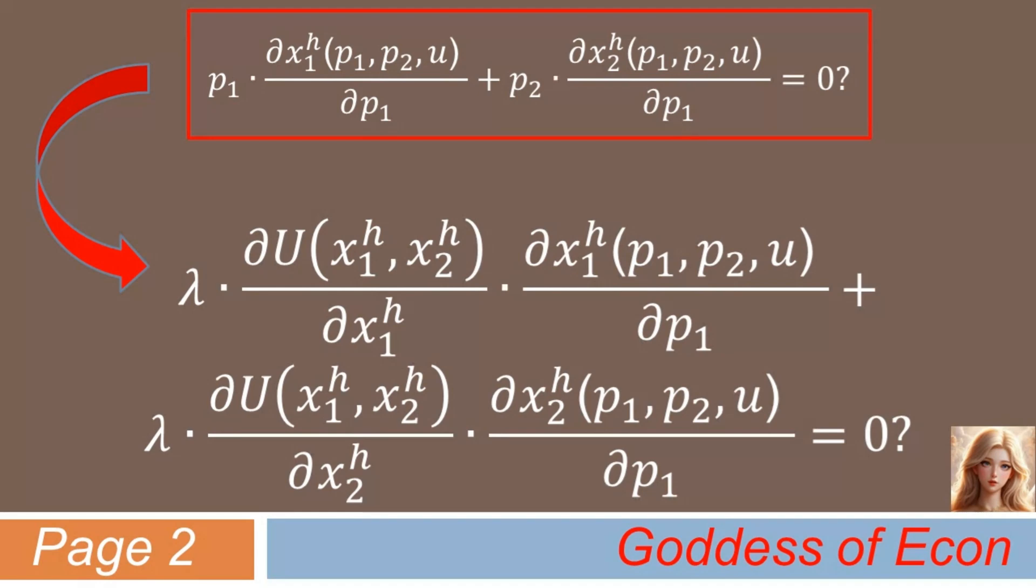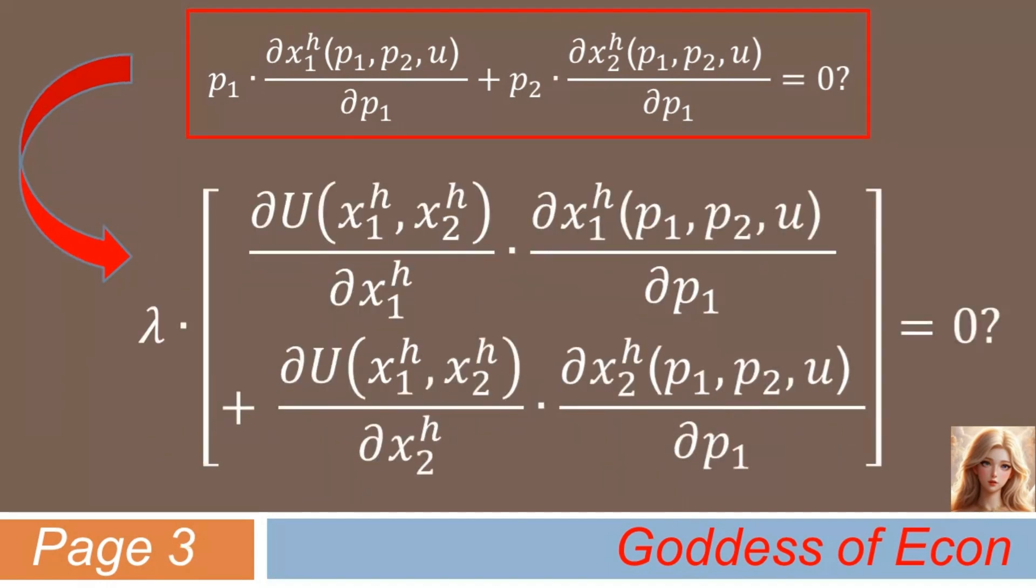Now, if you factor out λ, the expression would become the following. Here, if the expression in the bracket is 0, then we know that the whole thing would also be 0, as λ times 0 is 0.